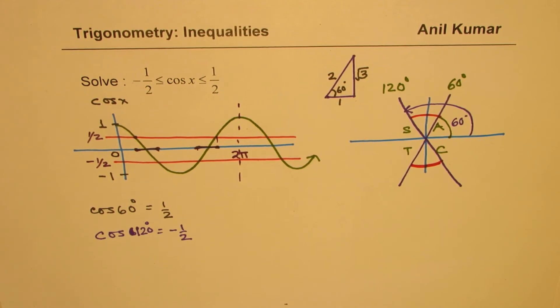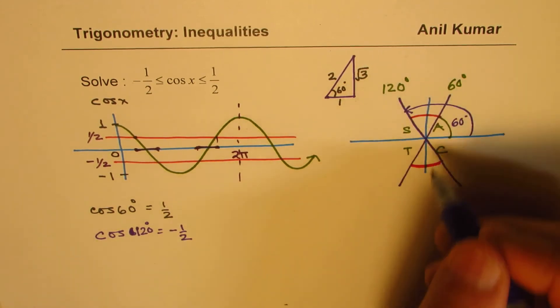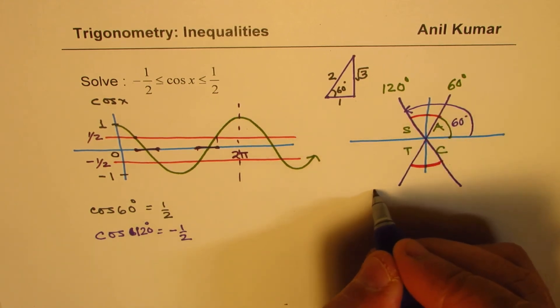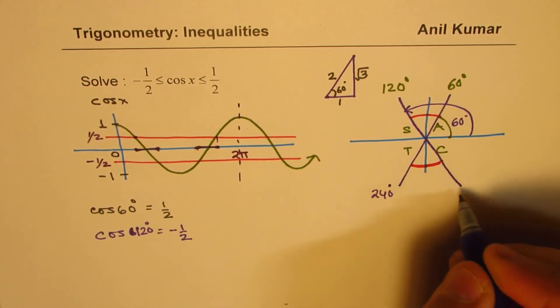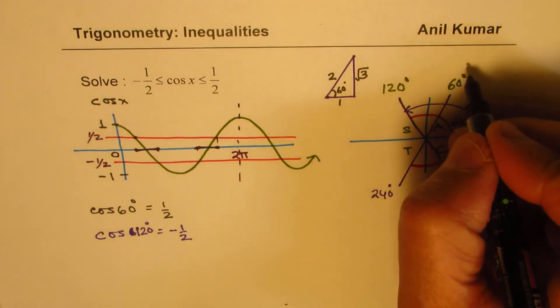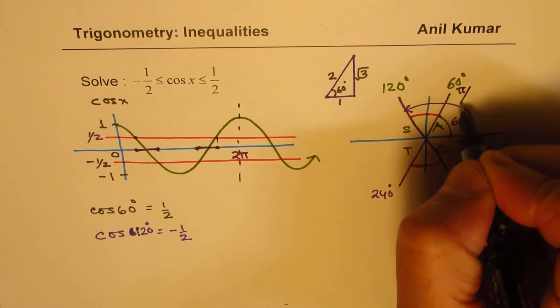So that is our result which is being shown right there. So if you are working in degrees, I could always write these angles as related acute angle of 60. So that becomes 240 degrees and this becomes 300 degrees.